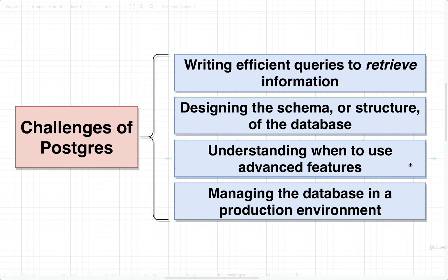Next up, out of all these different databases that you might use when writing SQL, every single one of them has different sets of advanced features. Understanding when to use these advanced features is generally pretty challenging. It might turn out that you never use any advanced features and just use the database as a plain data storage mechanism. But Postgres itself has a lot of special features tied to it, and sometimes it makes a lot of sense to use these, and sometimes it doesn't. So we're going to investigate a lot of these different features and understand when you should be using them.